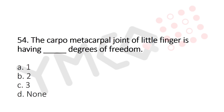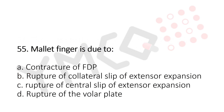Question 54: The carpal metacarpal joint of the little finger has how many degrees of freedom? Option A: 1, Option B: 2, Option C: 3, Option D: none. The answer is Option B, 2.